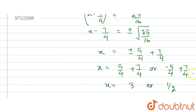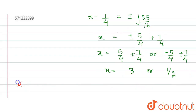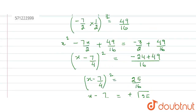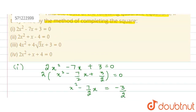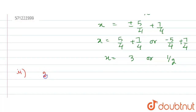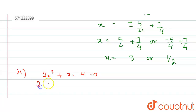The second part of the question is 2x² plus x minus 4 equals 0. Applying the method of completing the square, I first need to make the coefficient of x² equal to 1. Taking out 2 as a common factor, we are left with x² plus x/2 minus 2 equals 0.